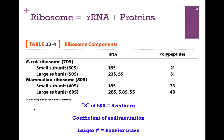Here we have a table listing the ribosome components, and we are comparing the E. coli ribosome with that of the mammalian system. In each case, there is both RNA and polypeptides within each of the two subunits. There is a small and a large subunit, although the size varies. The sizes are listed in parentheses — the 30S and 50S in the case of the E. coli ribosome. S stands for Svedberg, which is a coefficient of sedimentation, so the larger the number, the heavier the mass.